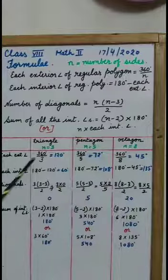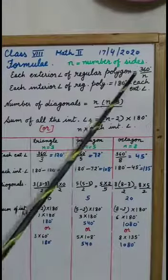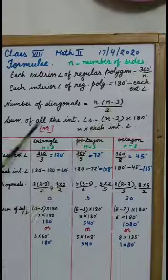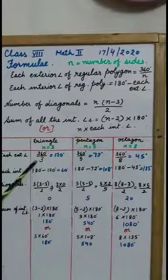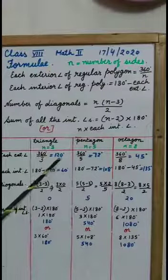Each exterior angle is equal to 360 degrees divided by n. So, we have done 360 degrees divided by 3 that is 120 degrees.